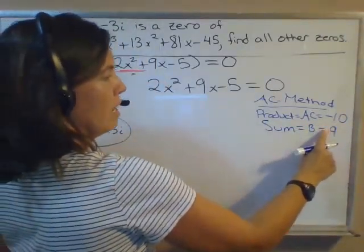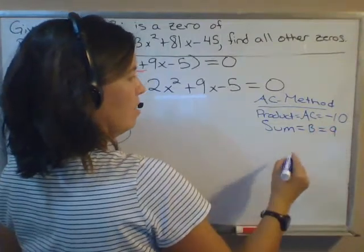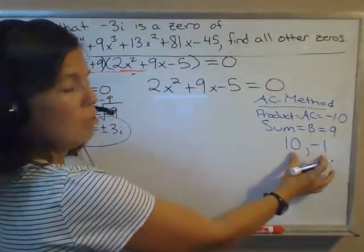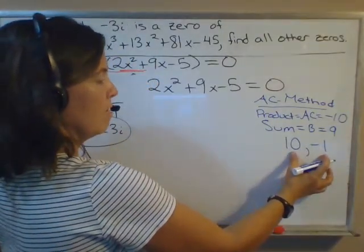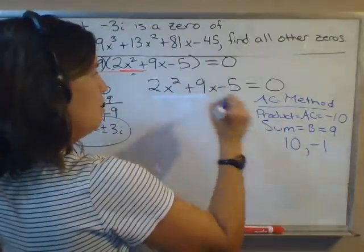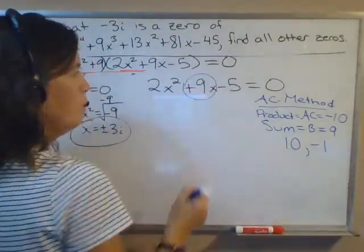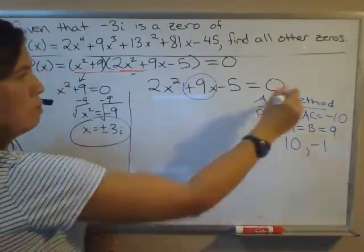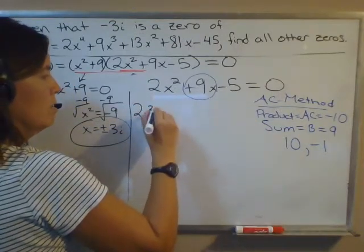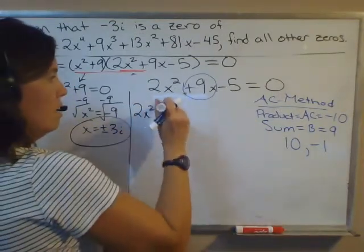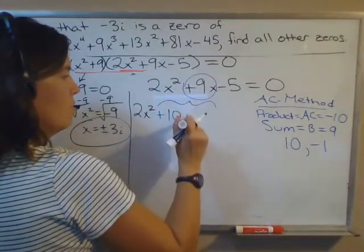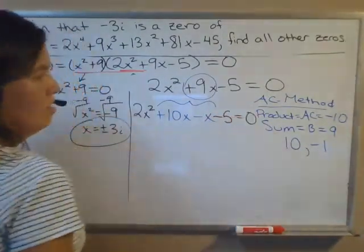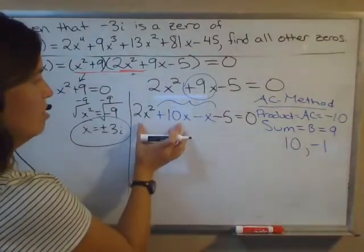Two numbers that multiply to give you -10 and add up to positive 9. Those two magic numbers would be +10 and -1. If you add those, you get +9. If you multiply them, you get -10. With the AC method, you expand this middle term, 9x, using these two values. Instead of writing 2x^2 + 9x - 5, we'll write 2x^2 + 10x - 1x - 5.